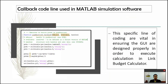This is the callback code used in the MATLAB simulation software. These specific lines of coding are vital in ensuring the GUI is designed properly in order to execute calculations in the link budget calculator. This is the main line of code used in MATLAB to generate the link budget calculator.